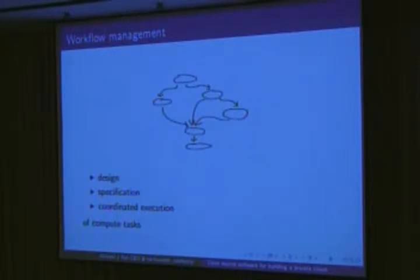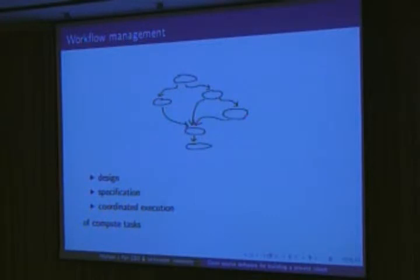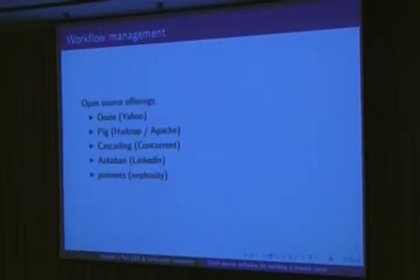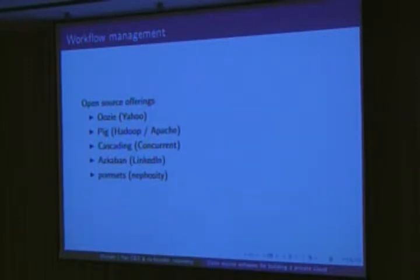For example, you have job one up there and after it executes, you execute the other two. But then it has to hold — after the right one finishes, you have to execute another one before you can actually finish the jobs. And each one of these themselves can be MapReduce jobs. Yahoo has something called Uzi — they just released Uzi end of June, so that's about a month and a half ago. Apache, along with Hadoop, also releases something called Pig, but that's really more of a structured query language. And then Concurrent releases something called Cascading that also sits on top of Hadoop.